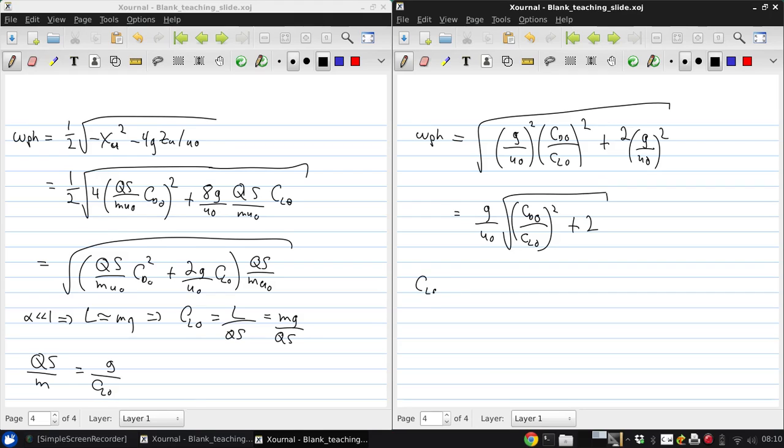Now for most aircraft, CL naught over CD naught is at least on the order of 10, so it's maybe between 8 and 20. What that means is that CD naught over CL naught, which is the inverse squared, is going to be much smaller than 1. If this is 10, this will be 0.01. If it's something more realistic for a modern airplane like 16, it'll be even smaller. So comparing that to this 2, we can approximate the Fugoid frequency as simply the square root of 2 times g over u-naught.